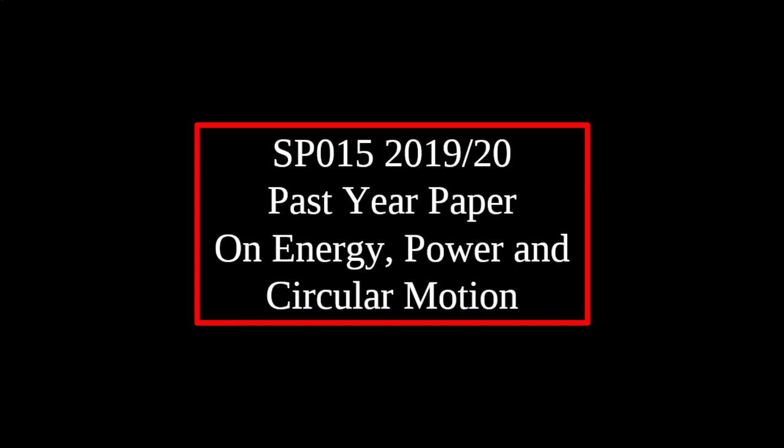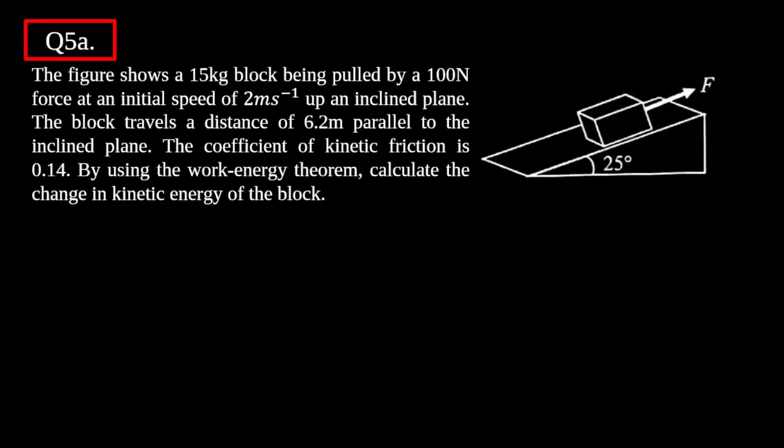Good day everyone. In this video I want to talk about past year questions from 2019/2020. This is going to be for the module SP015, which is the Malaysian matriculation certificate for physics. The questions I'm going to talk about today cover from energy and power all the way to circular motion, consisting of three questions: one on work, one on power, and one on circular motion.